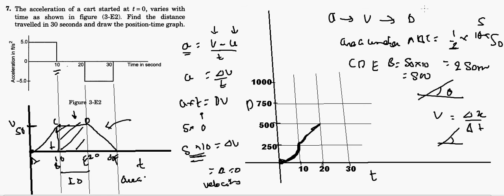Then deceleration begins — velocity is decreasing. For this last triangle, the area is the same as the first: ½ × 10 × 50 = 250 meters. So cumulative displacement: 250 (first triangle) + 500 (rectangle) = 750, and then the straight line goes up to 750. Adding the last 250 gives a total of 1000 meters. The position-time graph rises up to 750 as a straight line.